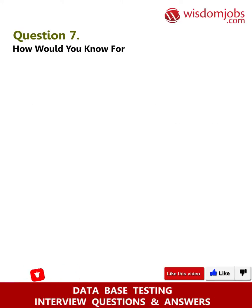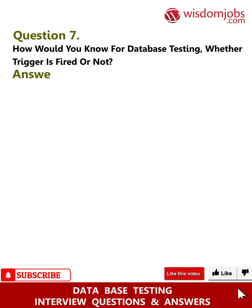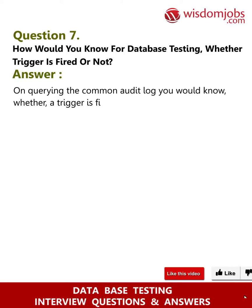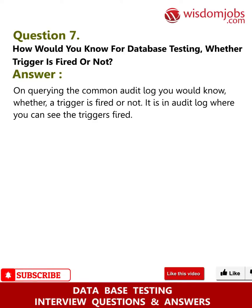Question 7: How would you know in database testing whether a trigger is fired or not? Answer: By querying the common audit log, you can know whether a trigger is fired or not. It is in the audit log where you can see the triggers fired.